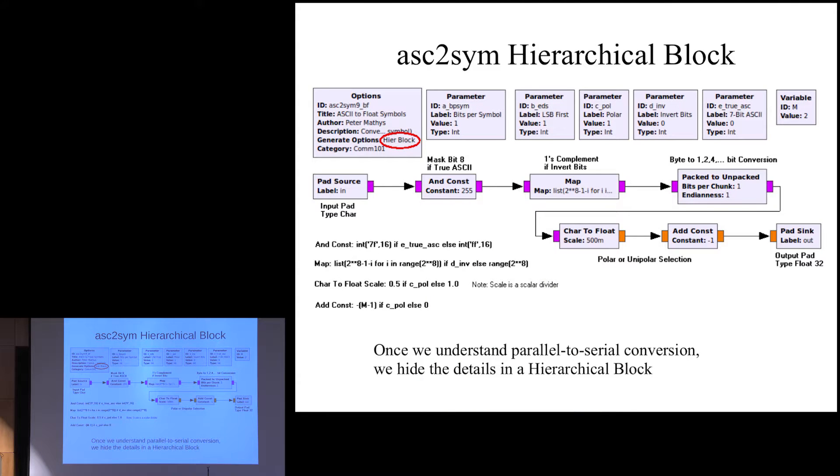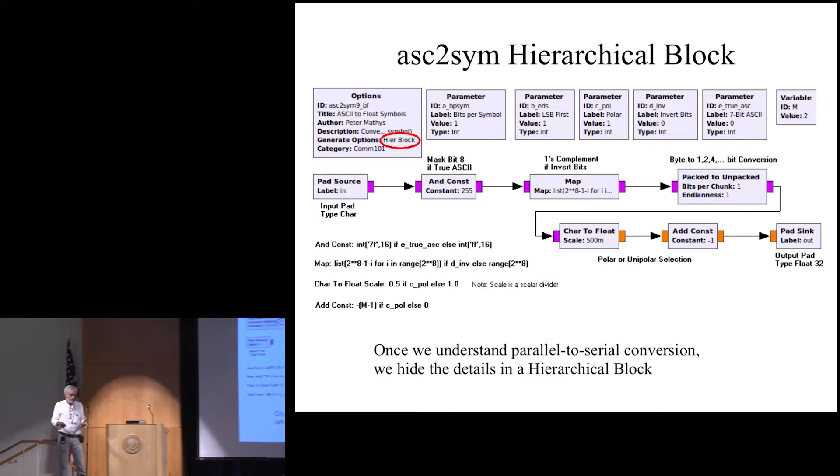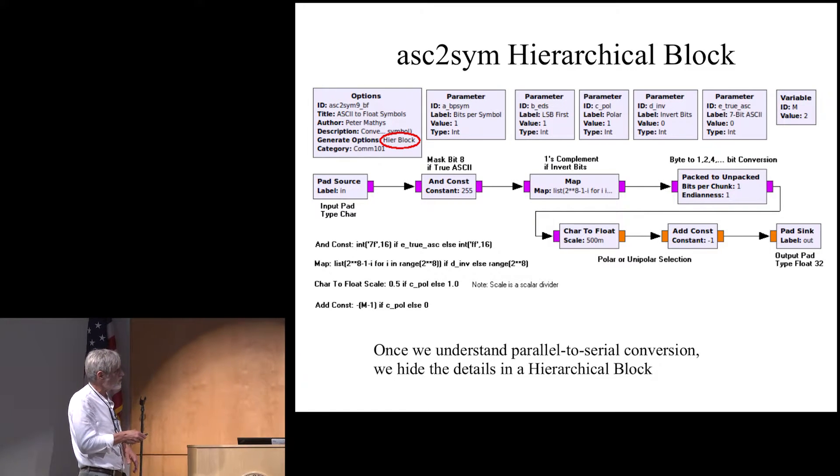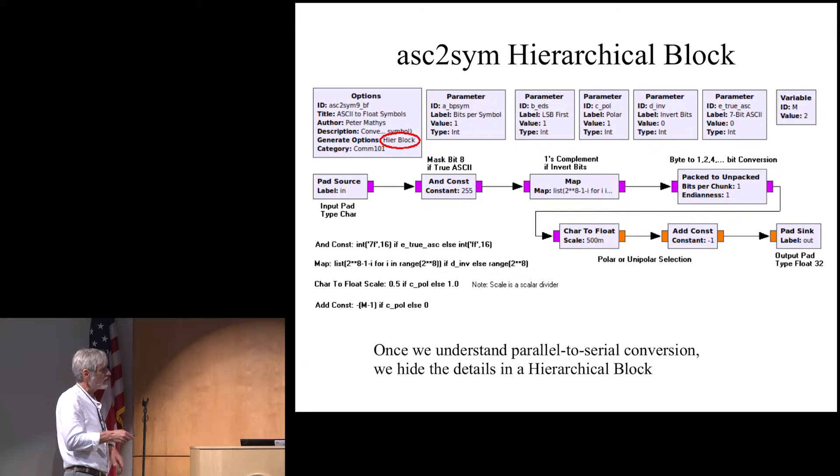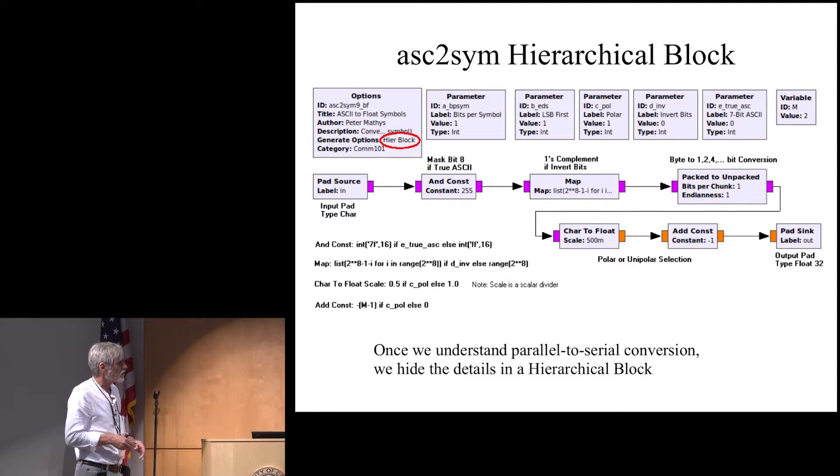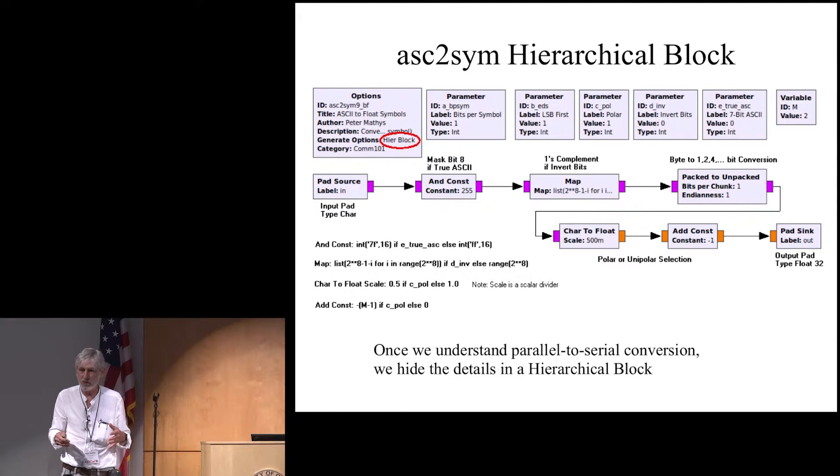OK, then once we understand what we are doing with the parallel to serial conversion, then we want to make that into a block that is, first of all, more general. So we have parameters up here, like how many bits per symbol, the endianness, that means LSB first or MSB first, polar or unipolar, and so forth. So there's a number of things that you would want to change when you do parallel to serial conversion.